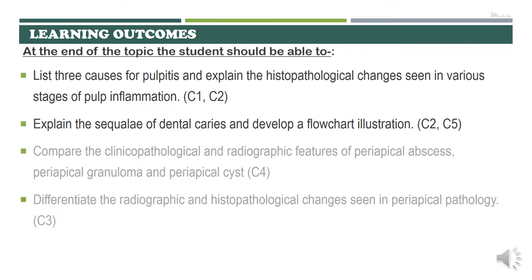The learning outcomes for today's topic will include the following. At the end of today's lecture we will be able to list three causes for pulpitis and explain the histopathological changes seen in various stages of pulp inflammation. We will also be able to explain the sequelae of dental caries and develop a flowchart illustration. In next week's topics we will be discussing the various periapical pathologies and the radiographic and histological changes related to these pathologies.